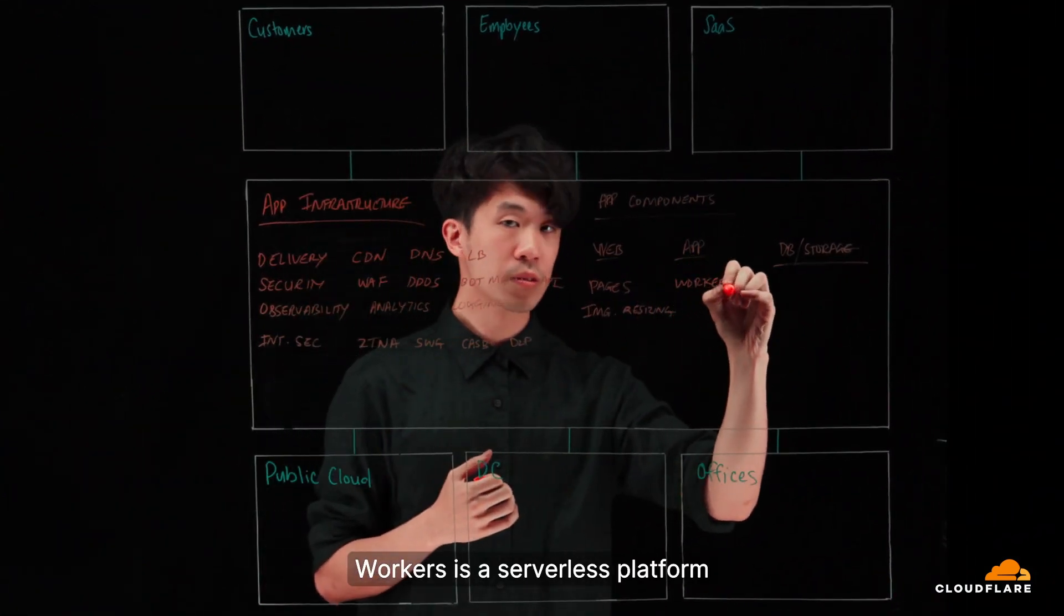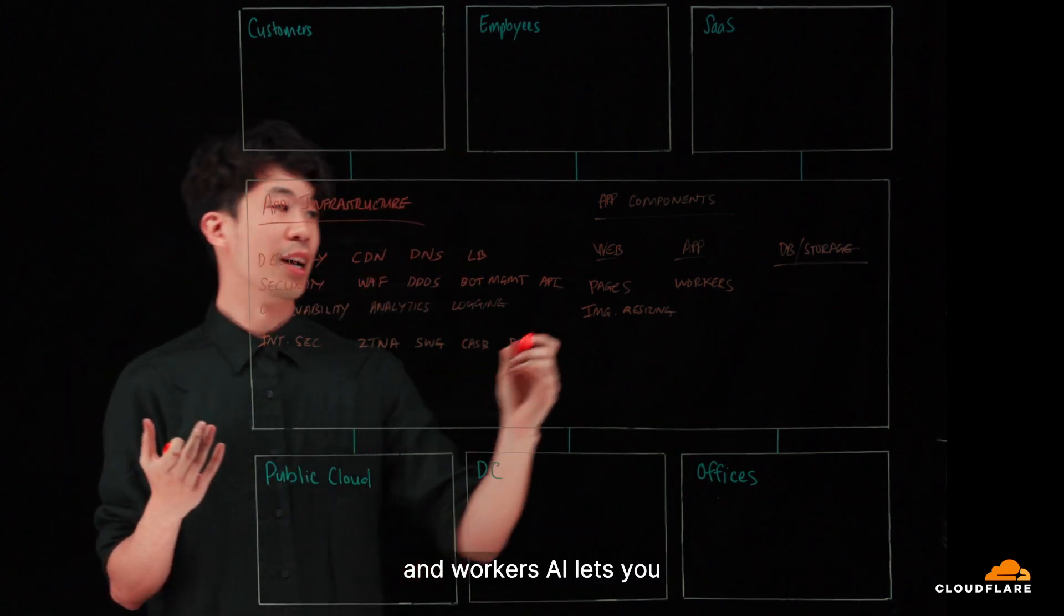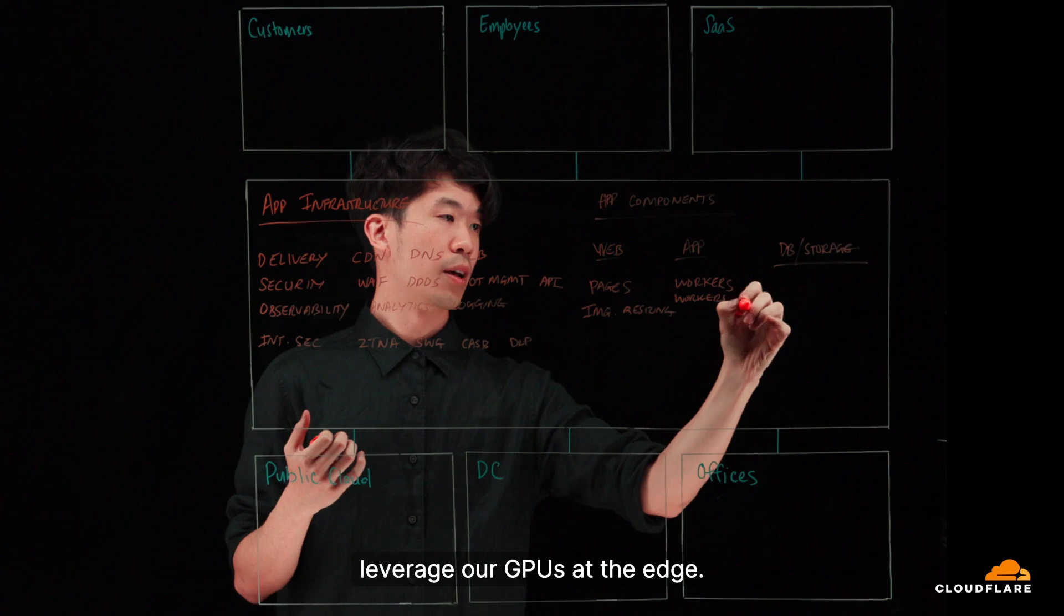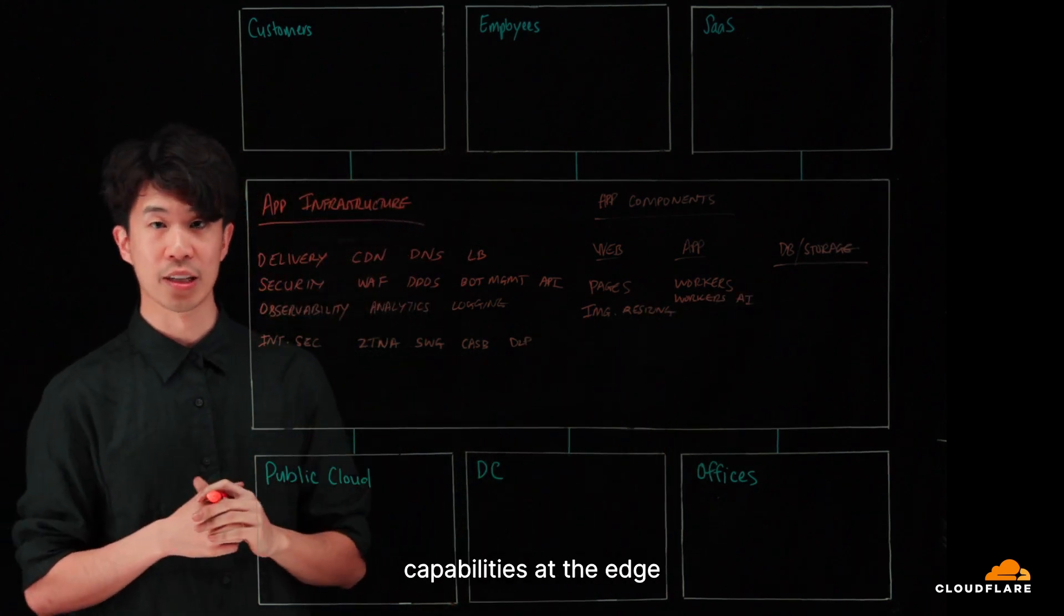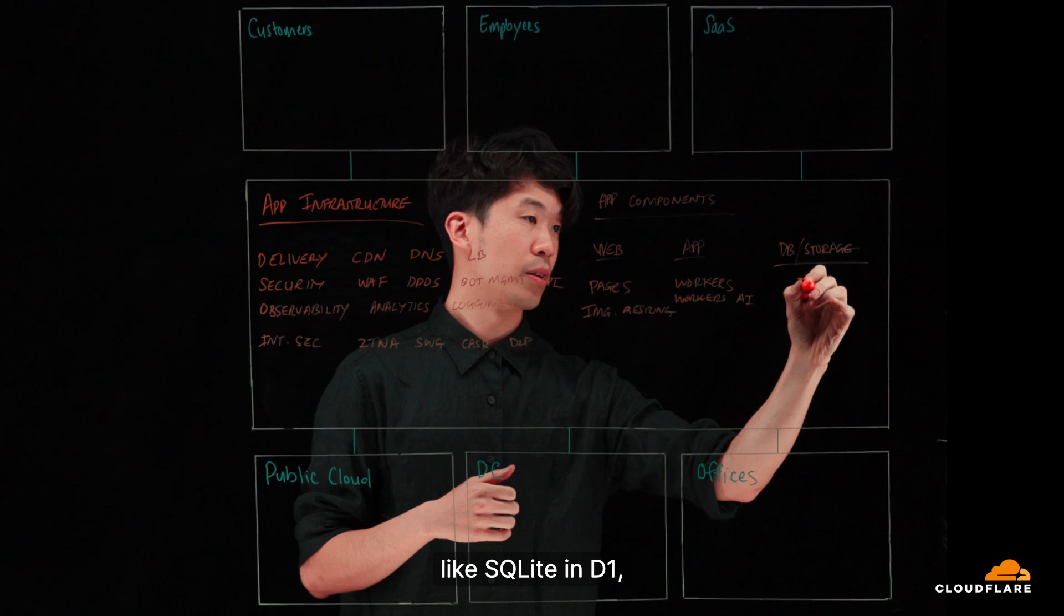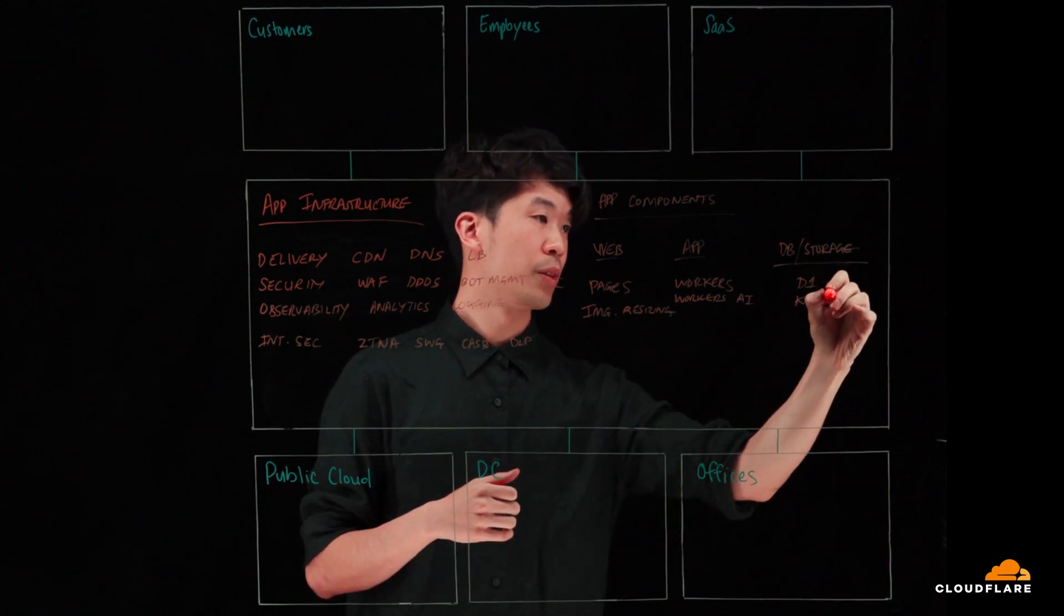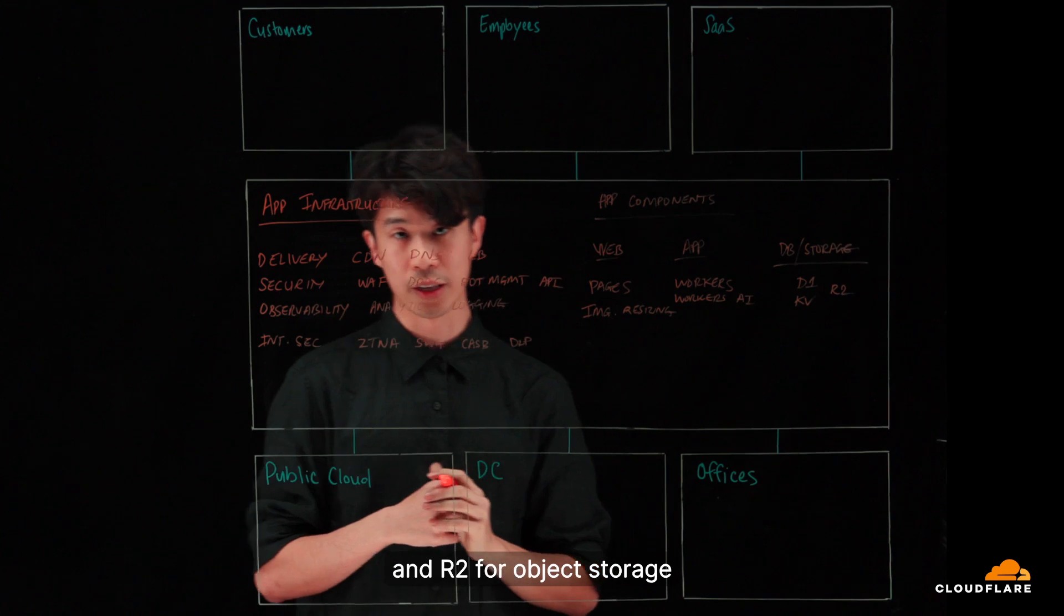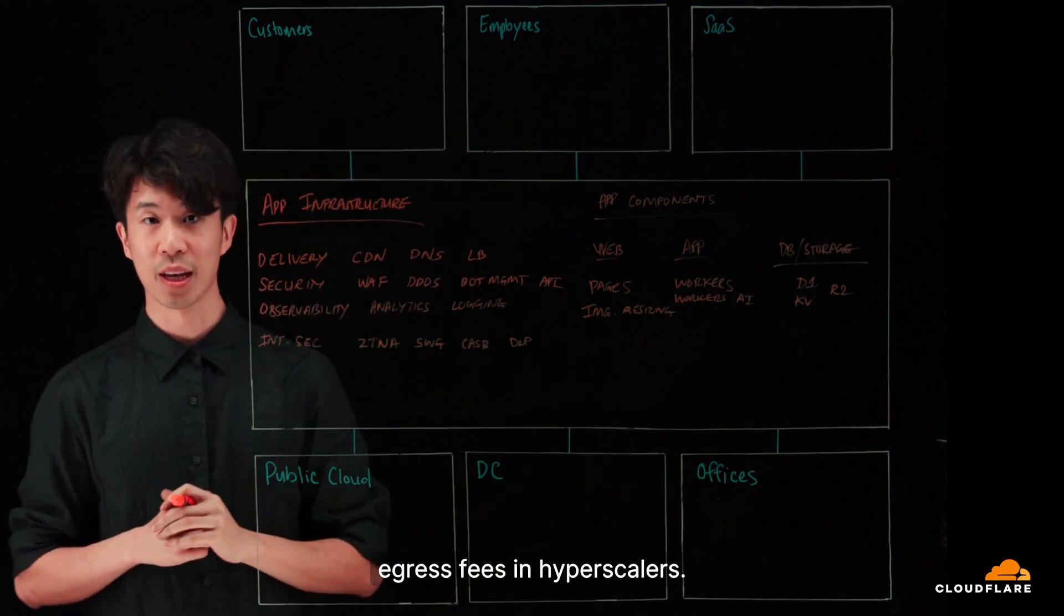Workers is a serverless platform and Workers AI lets you leverage our GPUs at the edge. We also have database capabilities at the edge like SQLite in D1, R1, KV for key value store, and R2 for object storage that reduces your high egress fees in the hyperscalers.